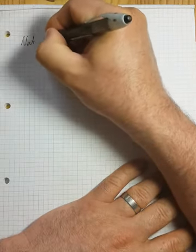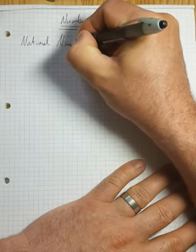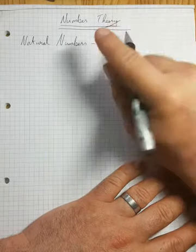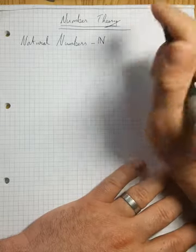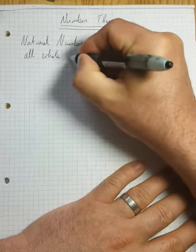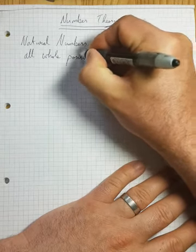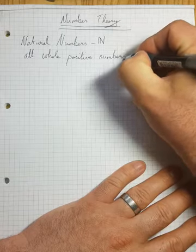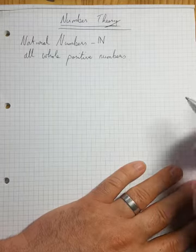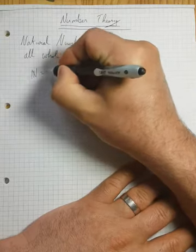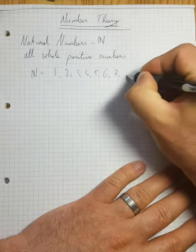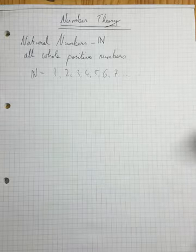The first number set we're going to look at is the natural numbers. The symbol for the set of natural numbers is a funny-shaped capital N with an extra little line. The natural numbers are all whole positive numbers — basically the numbers you learn to count with. The first natural number is one, then two, three, four, five, six, seven, and so on to infinity.